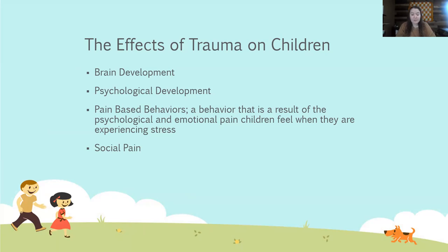For psychological development, it's affected by the age the child was first traumatized, the frequency of the traumatic experience, the degree to which the primary caretaker contributed to the trauma, and the intensity. The damage may result in problems with self-regulation, aggression, impulse control, attention, physical problems, or poor interpersonal relationships.